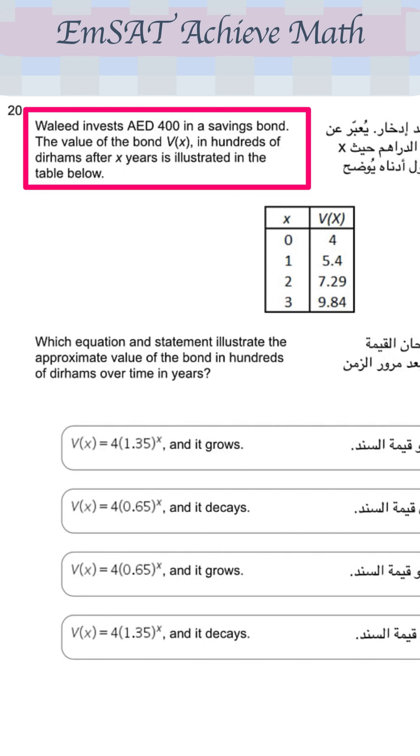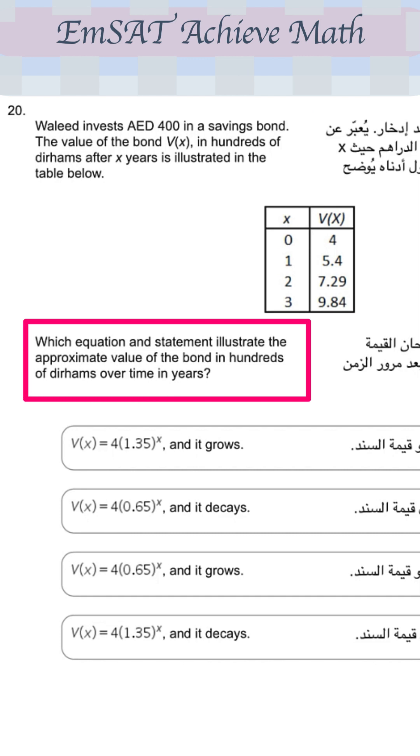Waleed invests 400 dirhams in a savings bond. The value of the bond V of X in hundreds of dirhams after X years is illustrated in the table below. Which equation and statement illustrates the approximate value of the bond in hundreds of dirhams over time in years?